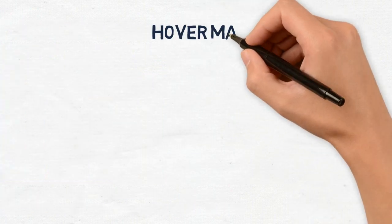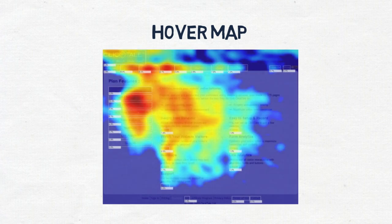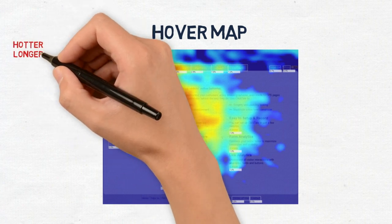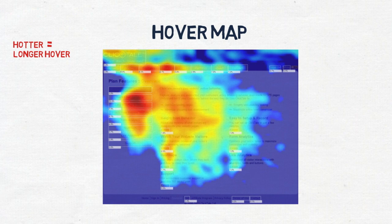Hover mapping shows where visitors hover their cursors while reading over your webpage. The hotter the area, the longer the user hovers their cursor over it. This data shows how users navigate your website, so you can place important elements where they'll receive the greatest amount of attention. You can also figure out if non-essential elements are distracting your visitors from the important ones.